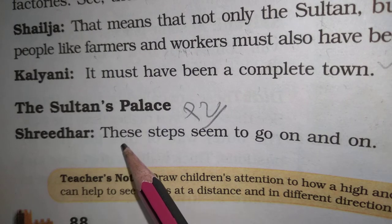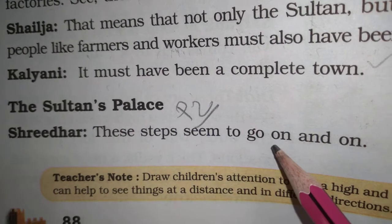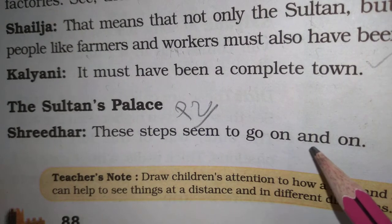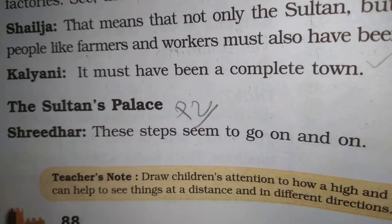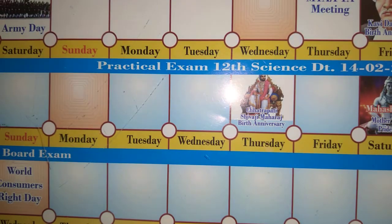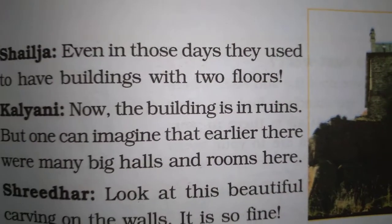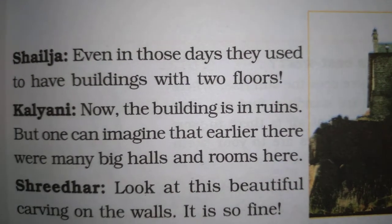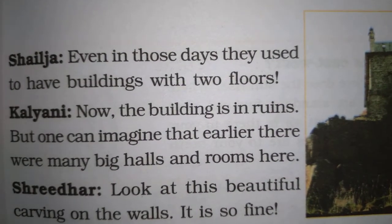Sridhar says: 'These steps seem to go on and on.' Sridhar kya bolta hai ki mujhe lagta hai ki yeh jo steps hain, yaani ki jo seedhiyaan hain, oh go on and on — bhoat hi upar hi upar jaati hain.